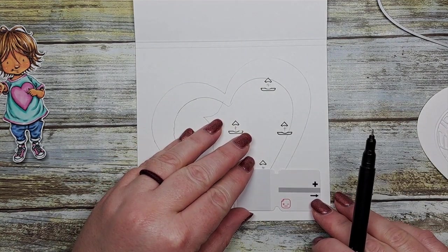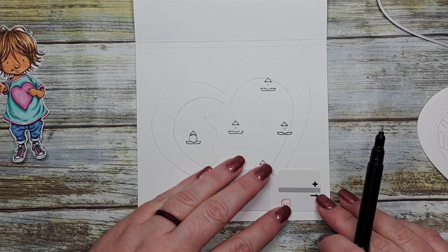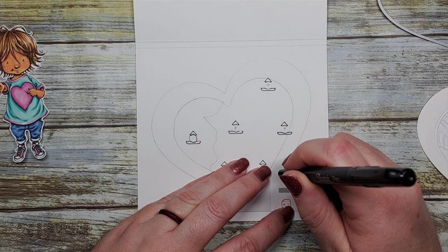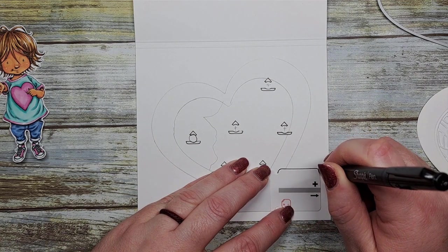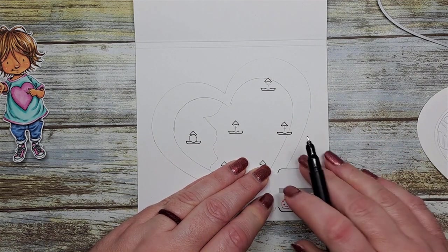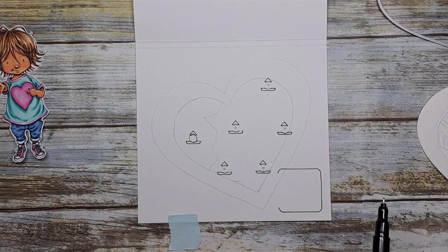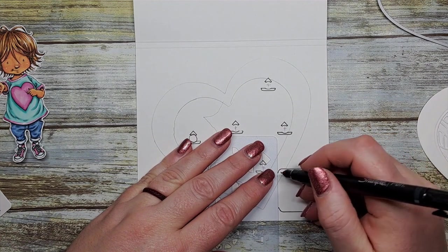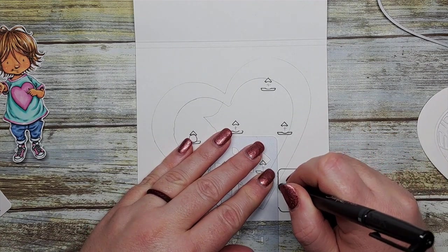Then we're going to map out our battery holder. These are one of our new battery holders in conjunction with We Are Makers. I'm just going to trace that base just so that I know where the location of my switch will be. I'm just going to close up that square with my craft stencil.